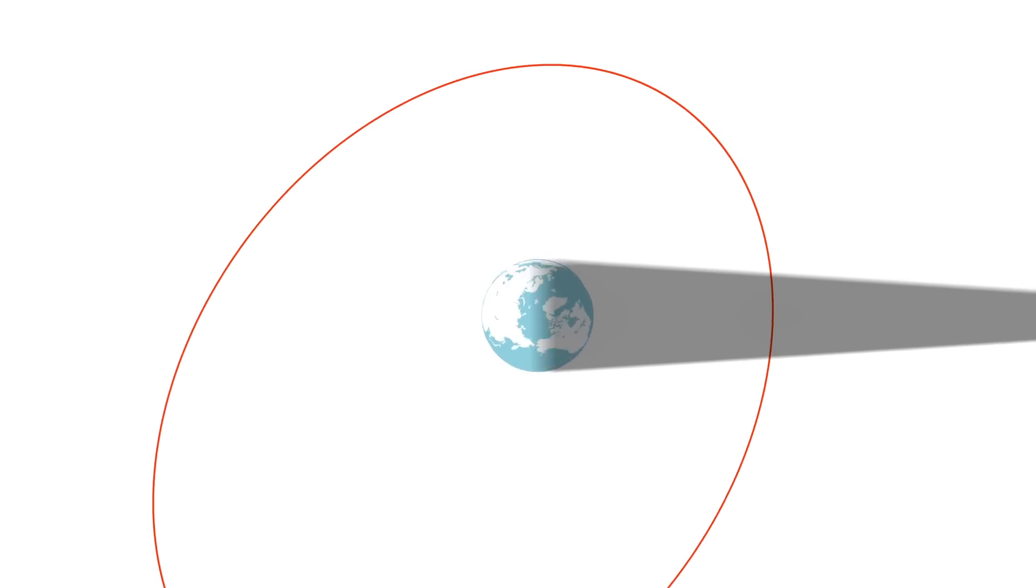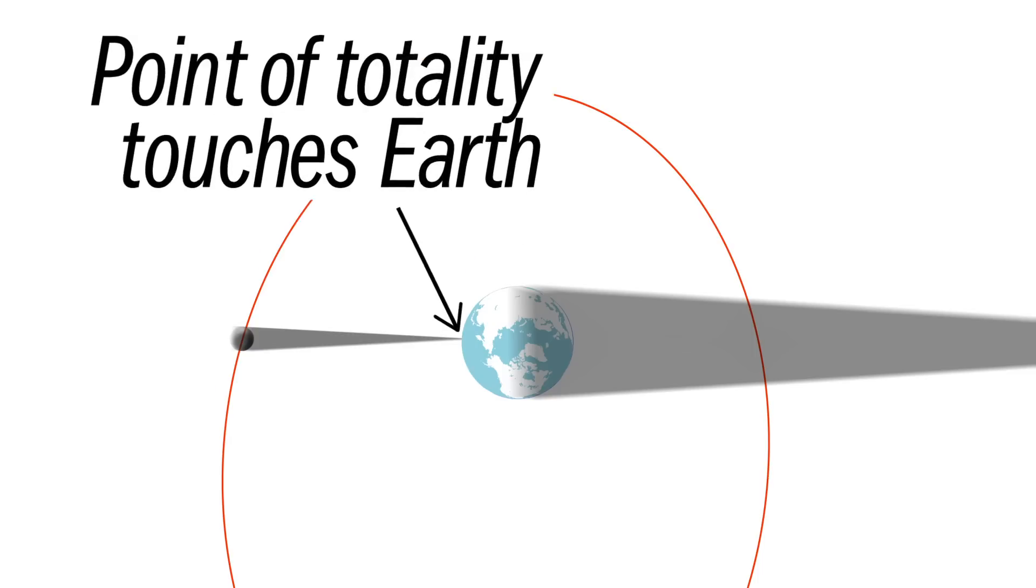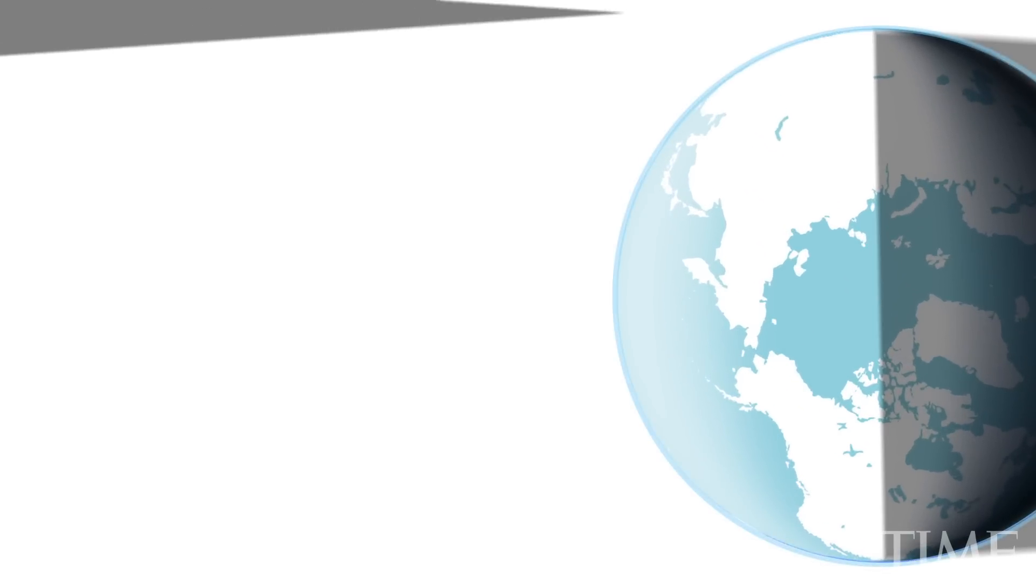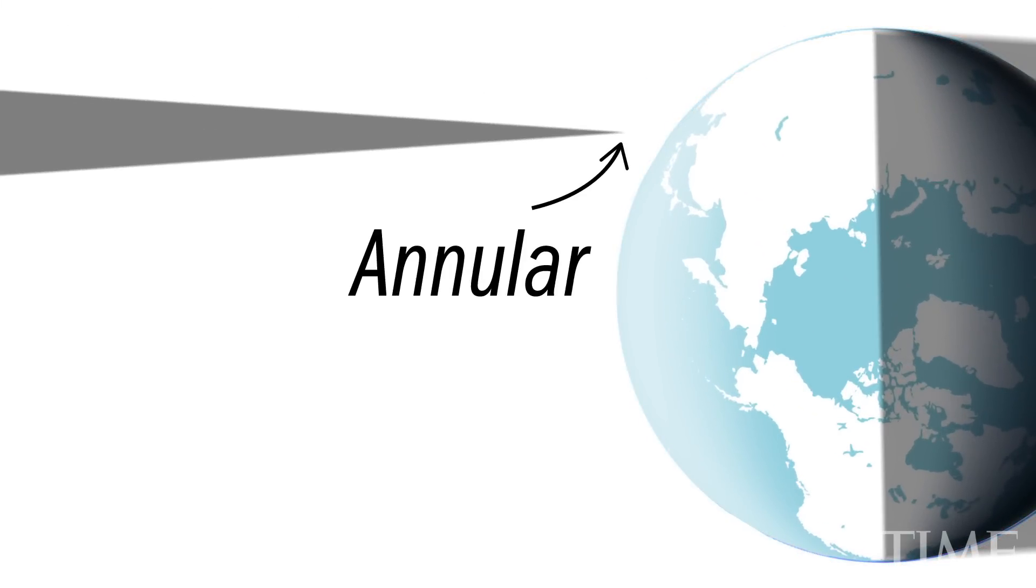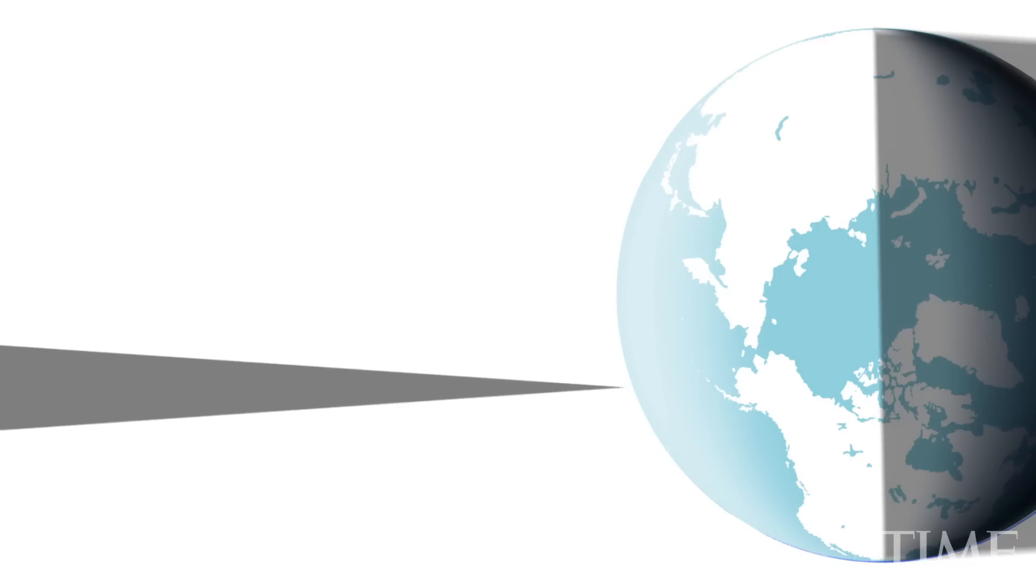Total eclipses occur at the Moon's closest approach, where the Sun is blocked out completely. Because Earth's surface is curved, in some cases an eclipse can shift between annular and total and annular again.